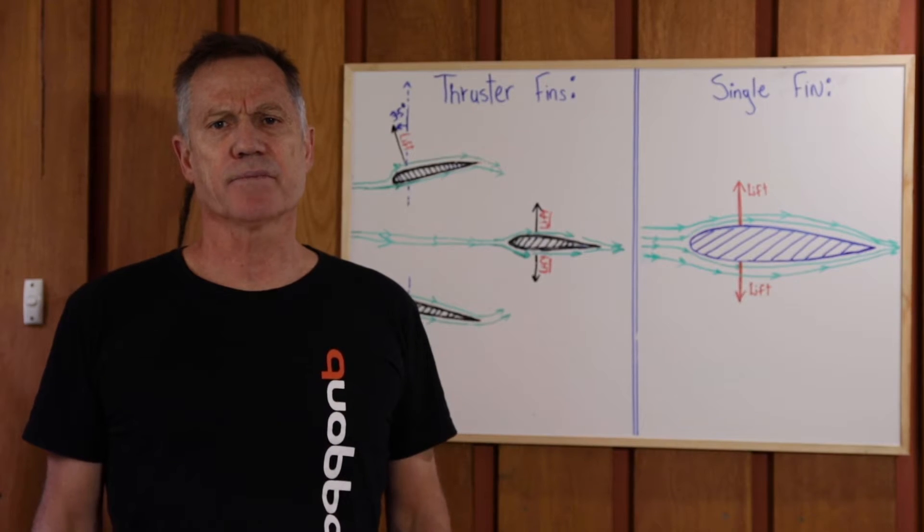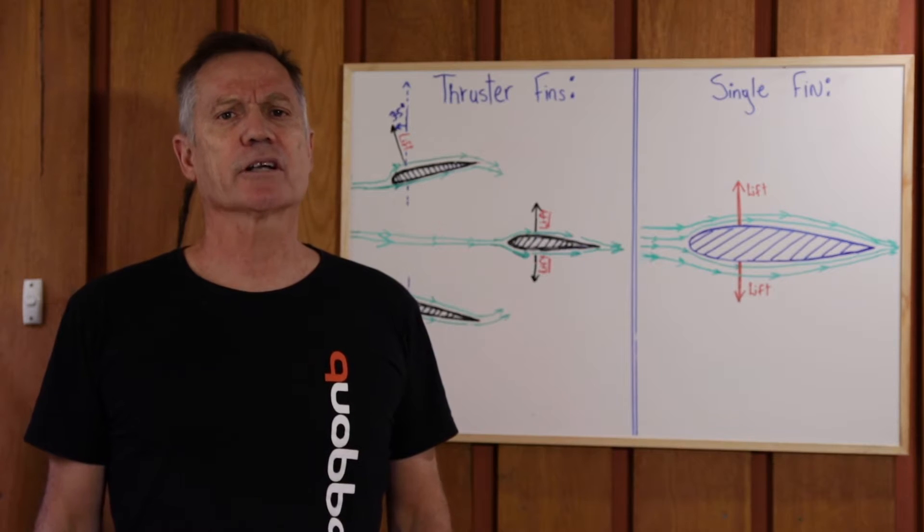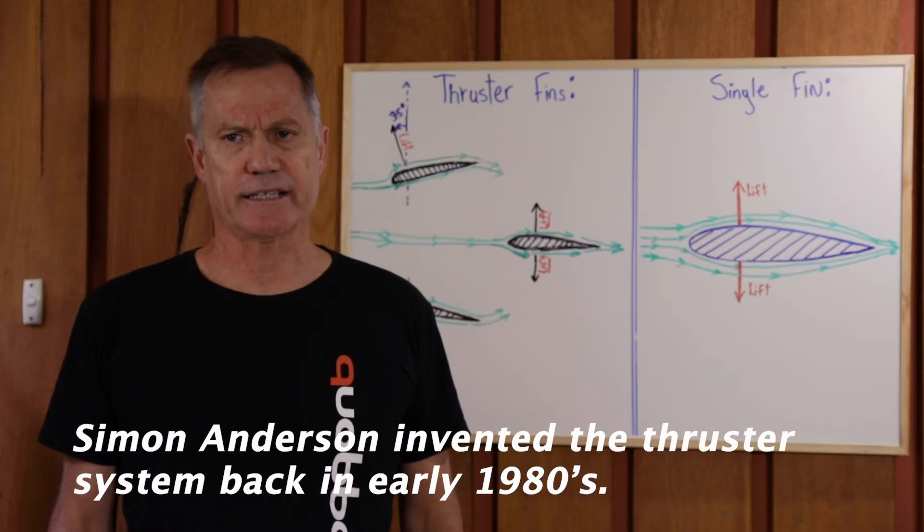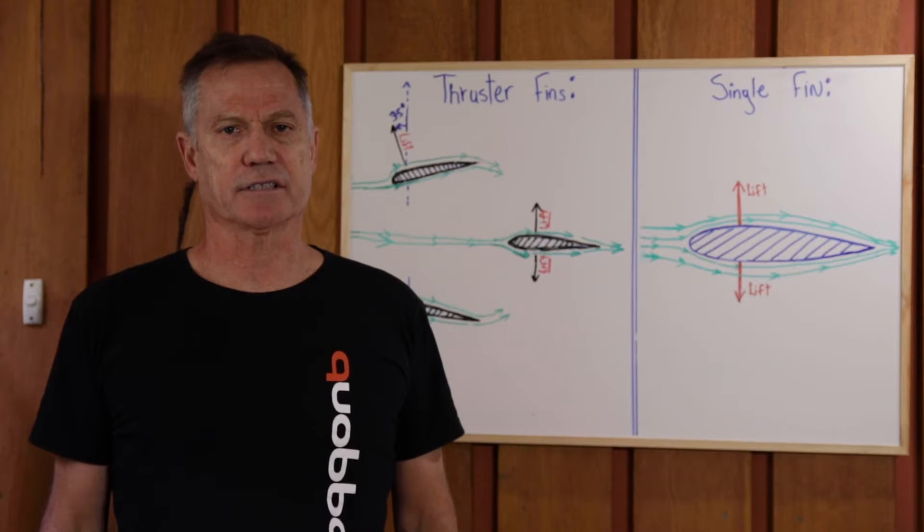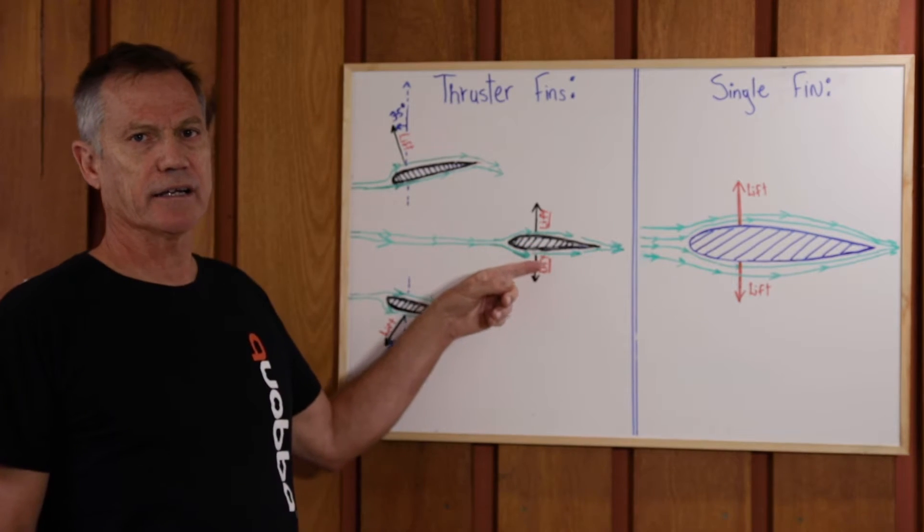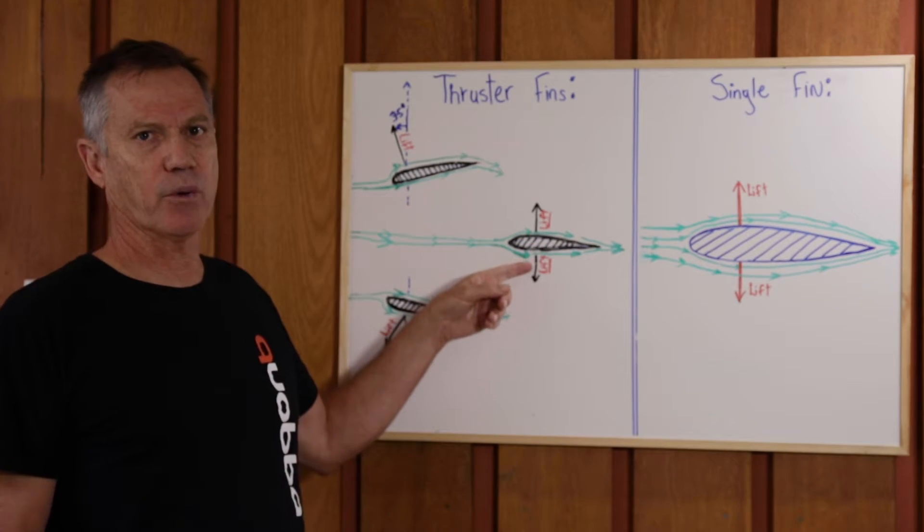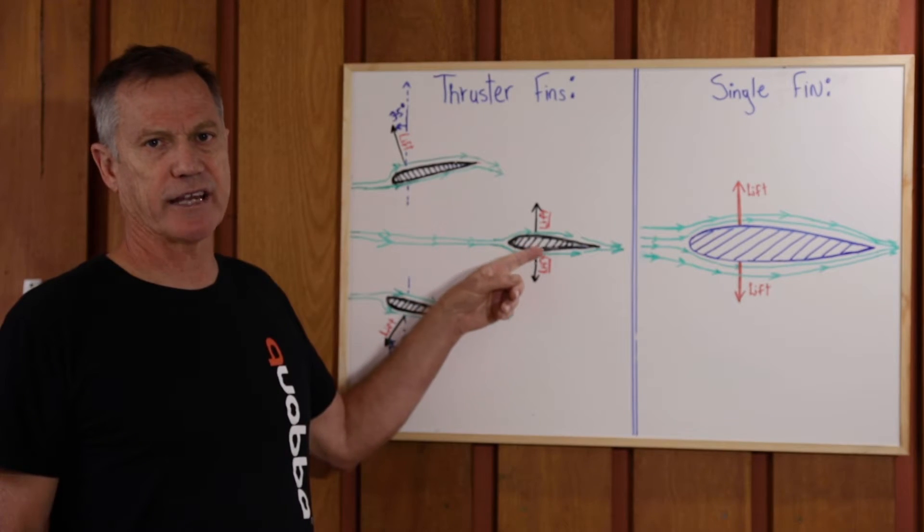The thruster fin system, or three fin configuration, was invented by Simon Anderson back in about 1980. At that time, Simon made three basic changes to fin systems. What he did was he placed the rear fin basically at the back of the board. It was a smaller, much smaller fin than the traditional rear fins at that time.